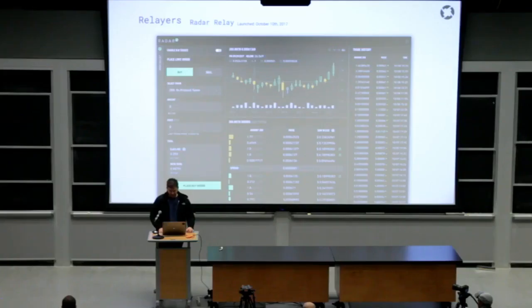The first relayer to go live on the mainnet and see adoption is Radar Relay. It's really awesome. Decentralized exchange uses the open order book model. I would encourage you to check it out if you're interested in trying out one of these relayers. They're doing a pretty significant amount of volume every day now.